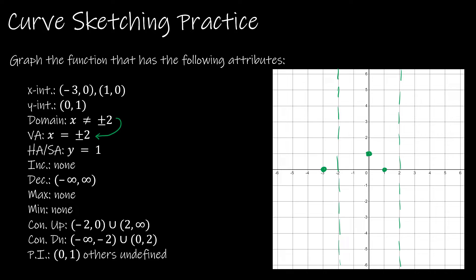There's also a horizontal asymptote at y = 1. I want to make sure we're clear about the difference between a horizontal and vertical asymptote. Nothing should ever cross a vertical asymptote, whereas when you have a horizontal asymptote, the graph can cross it in the middle. We only worry about a horizontal asymptote as you approach infinity — so as we go toward positive and negative infinity, nothing is going to cross that asymptote.